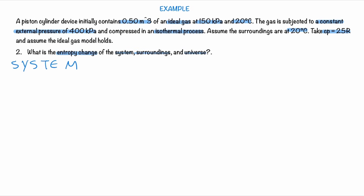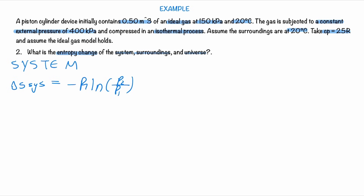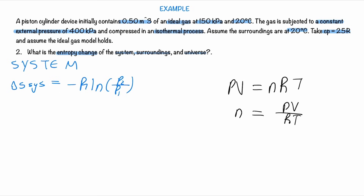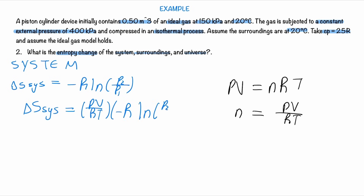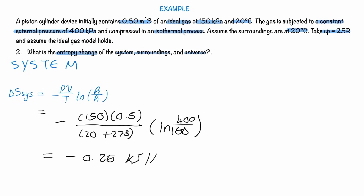To find the entropy change of the system, we use our general formula for constant Cp. The first term is zero since the process is isothermal. To get the entropy, we multiply the equation by the number of moles. Since we don't have the moles directly, we use the ideal gas law PV = nRT, substitute into the equation, cancel out the gas constant, and plug in the values. The entropy change of the system is −0.25 kJ/K.